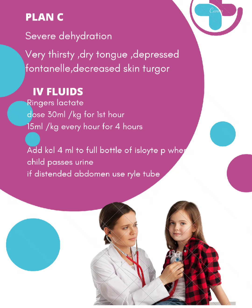Plan C is for severe dehydration. Signs include dry tongue, depressed fontanels, and decreased skin turgor. We give IV Ringer's Lactate (RL): 30ml per kg in the first hour, then 15ml per kg every hour for 4 hours. We assess every 15 minutes and continue until the child is normal with normal skin turgor.